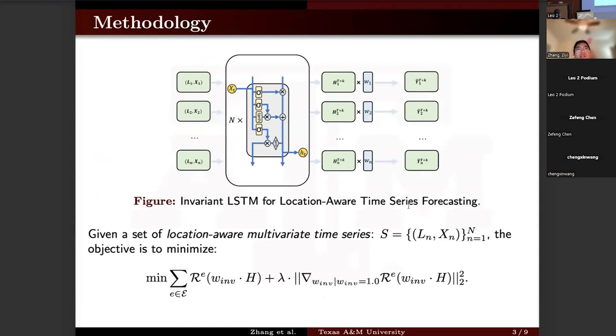To address this challenge, we proposed a methodology named the invariant LSTM for location-aware time series forecasting. To be more specific, given a set of location-aware multivariate time series collected from n locations, here we denote it as S, where L is information of geographical coordinates and X is a multivariate time series collected at that location.